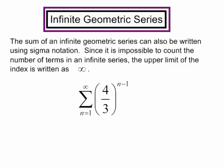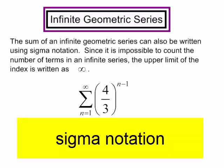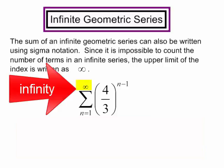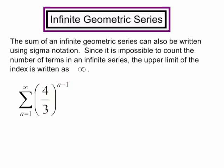Let's try one more. The sum of an infinite geometric series can also be written using sigma notation. Since it is impossible to count the number of terms in an infinite series, you notice that the upper limit of this index is written as infinity. So my n will equal 1 to infinity.